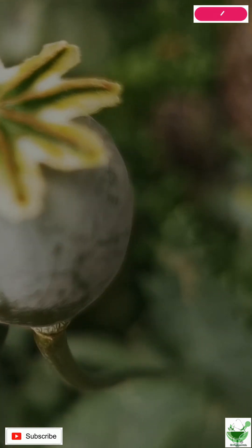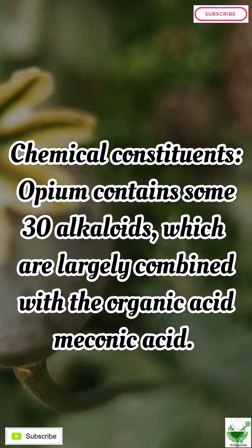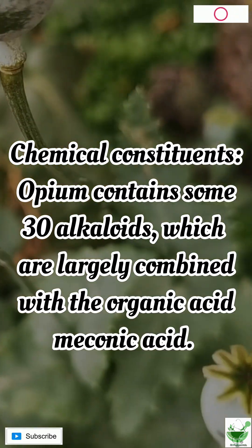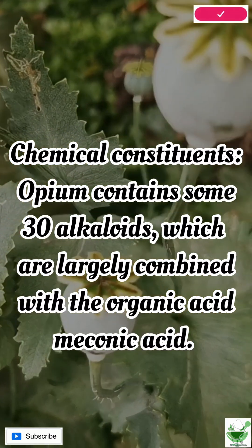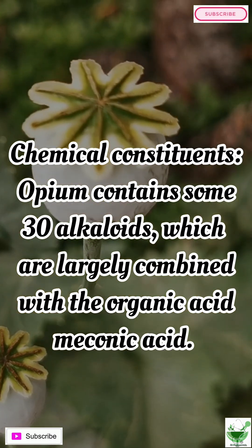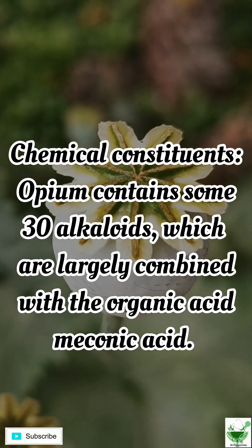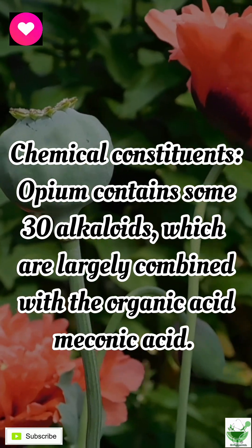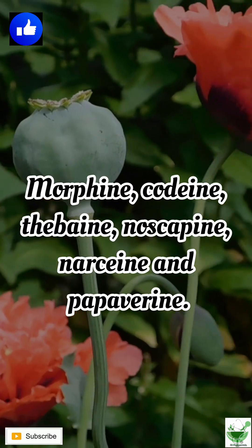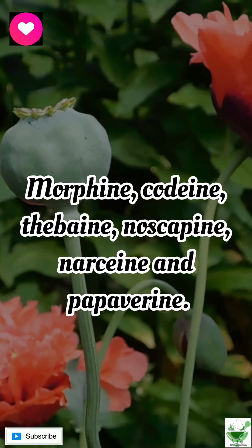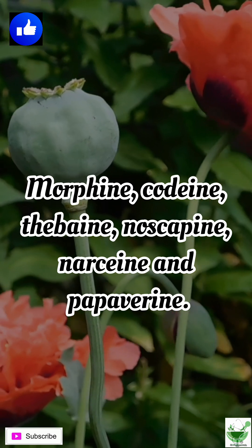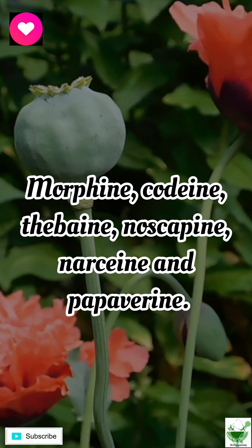Chemical constituents: opium contains some 30 alkaloids, which are largely combined with the organic acid meconic acid. Morphine, codeine, thebaine, noscapine, narceine, and papaverine.